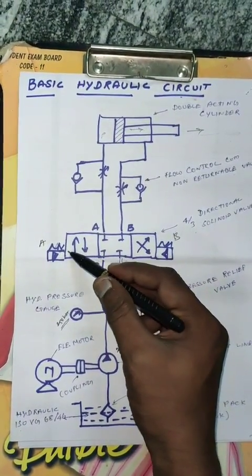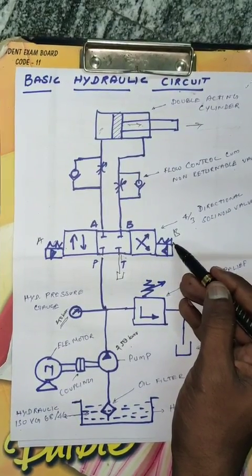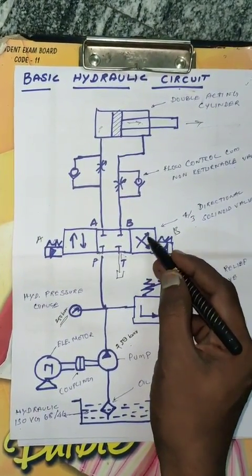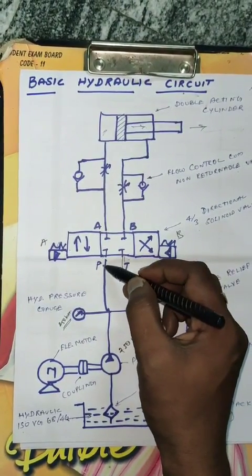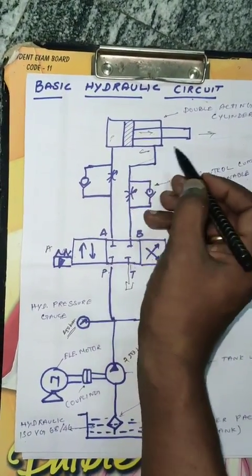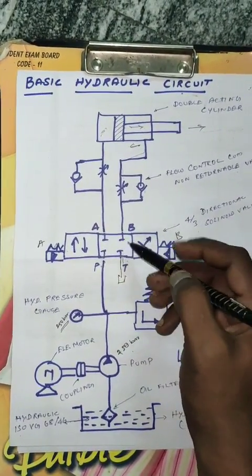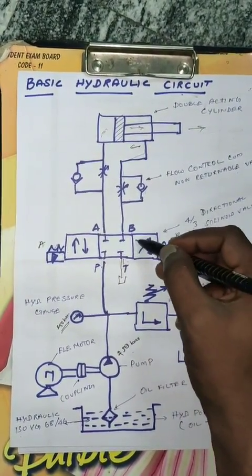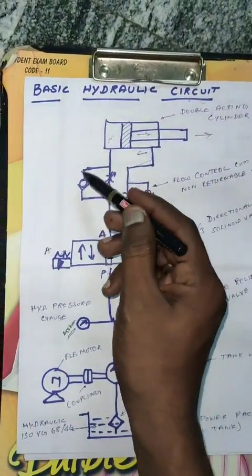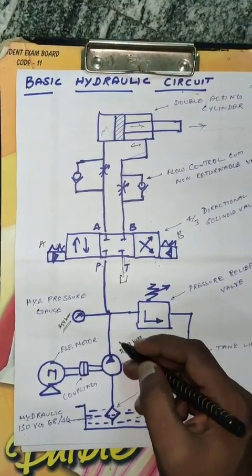Cylinder forward is A coil energized. Cylinder forward is B — B energy is P2B, pump pressure. Direction changes on the coil. Cylinder return — return on the coil. Cylinder forward and reverse. This is the flow control non-return valve. The pump is...